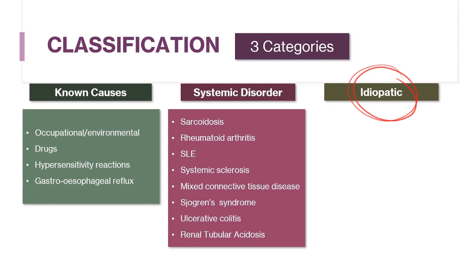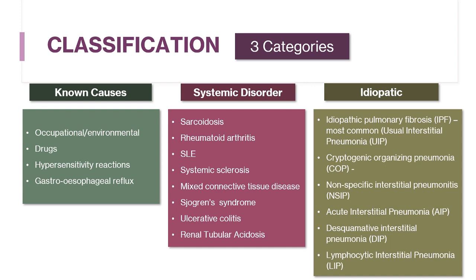The idiopathic group of DPLD makes up a very large proportion of ILD patients. Diseases in this category have unknown etiology and are known as idiopathic interstitial pneumonia. They are distinguished based on predominant histological patterns and are frequently named after their pathological description. The most common is idiopathic pulmonary fibrosis, also known as cryptogenic fibrosing alveolitis, with the histopathological name of usual interstitial pneumonia. Others include cryptogenic organizing pneumonia, nonspecific interstitial pneumonitis, acute interstitial pneumonia, desquamative interstitial pneumonia, and lymphocytic interstitial pneumonia.